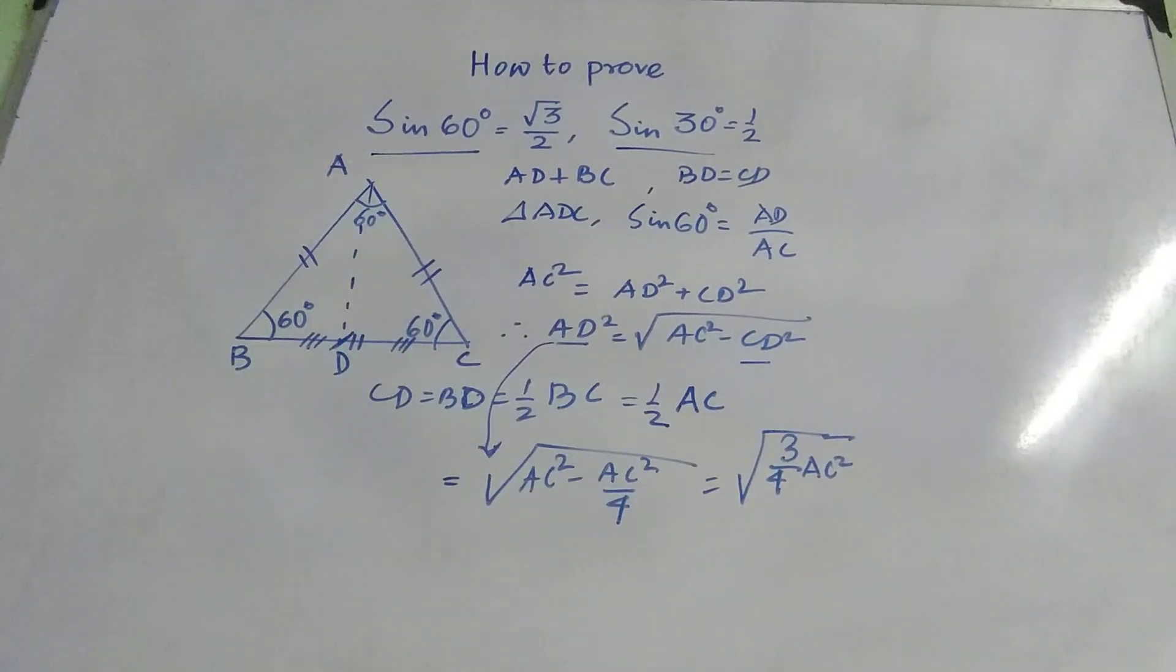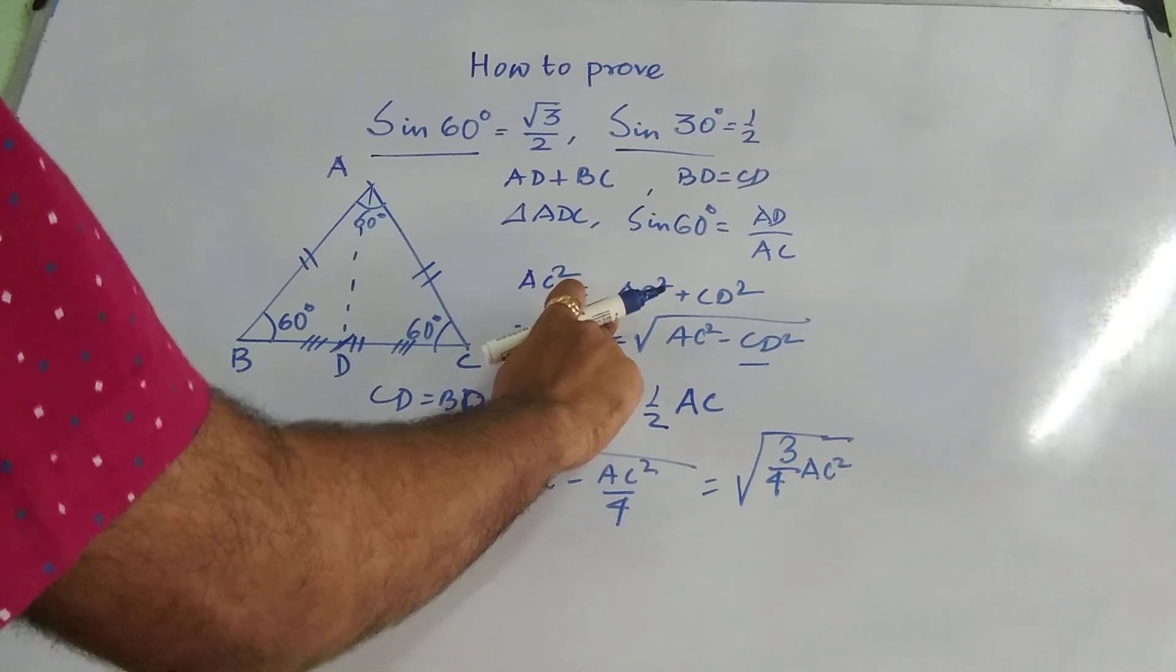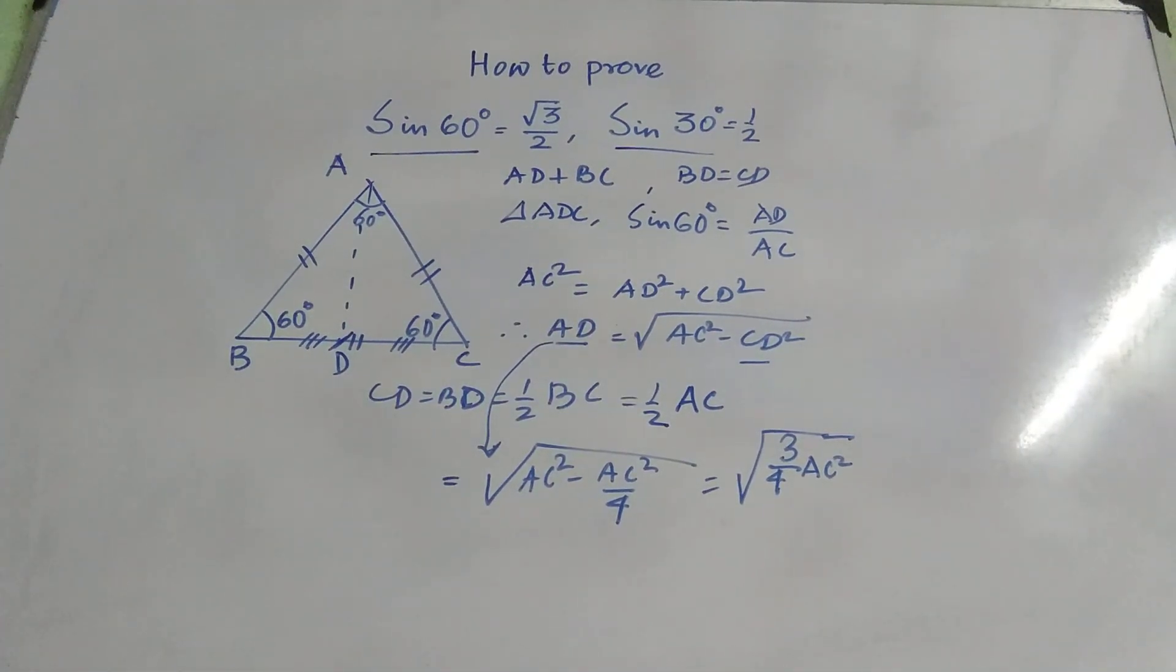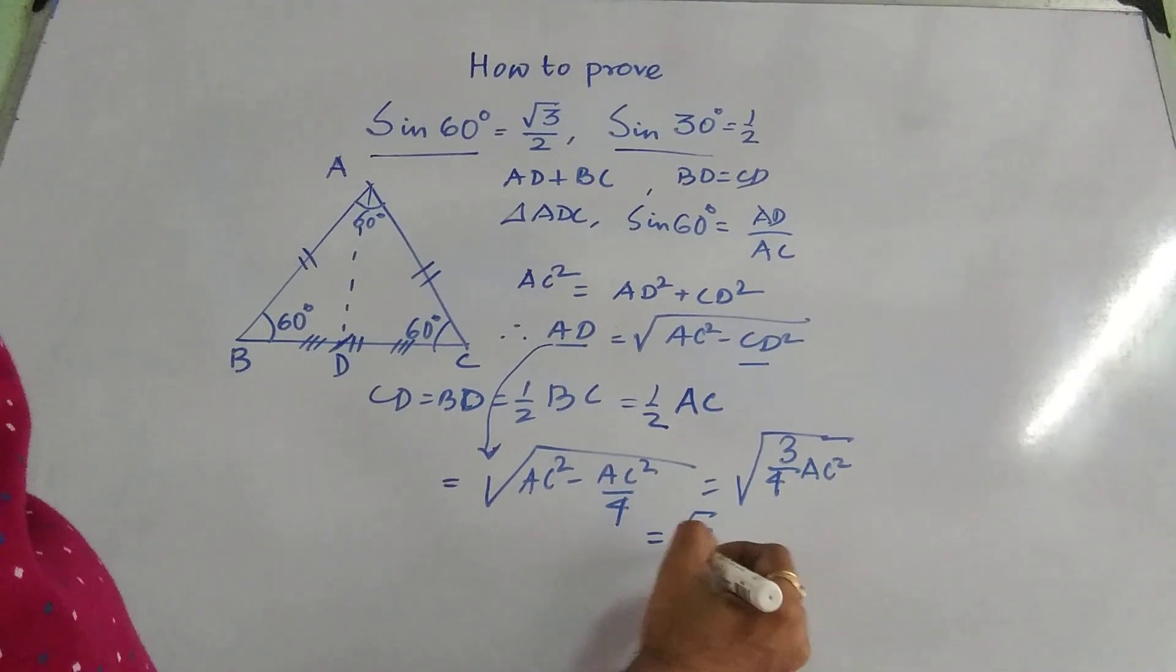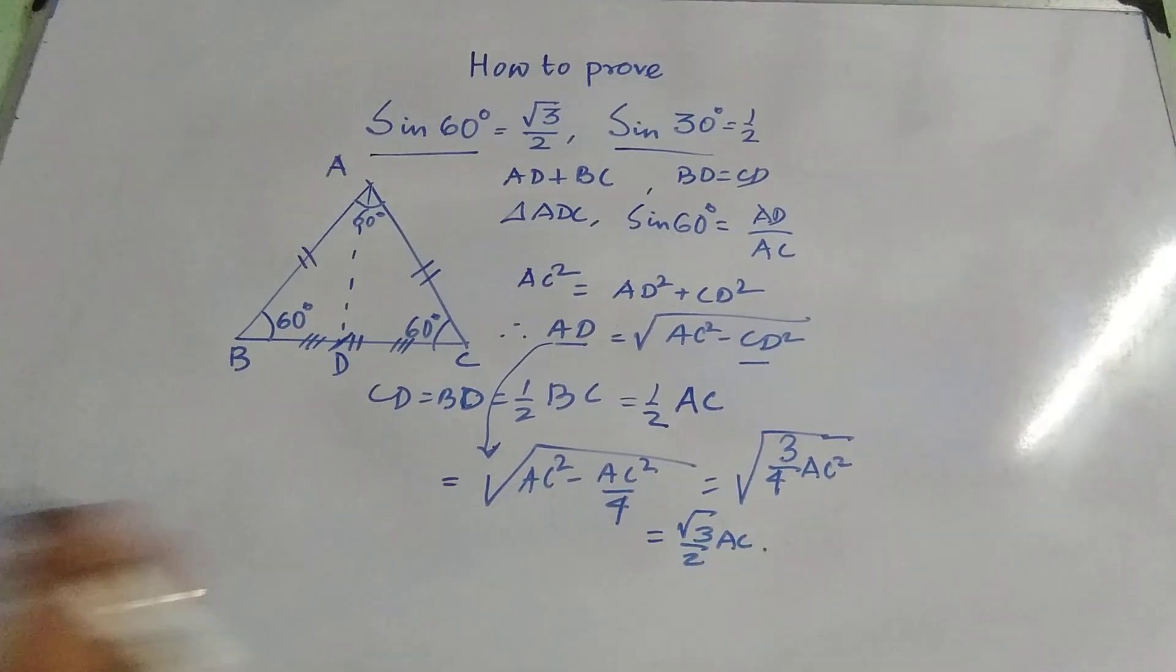That means it is basically nothing but root over 3 by 4 into AC square. What is that? That is AD square. So basically, it is not AD square, it will be AD. So it becomes to root over 3 by 2 into AC.